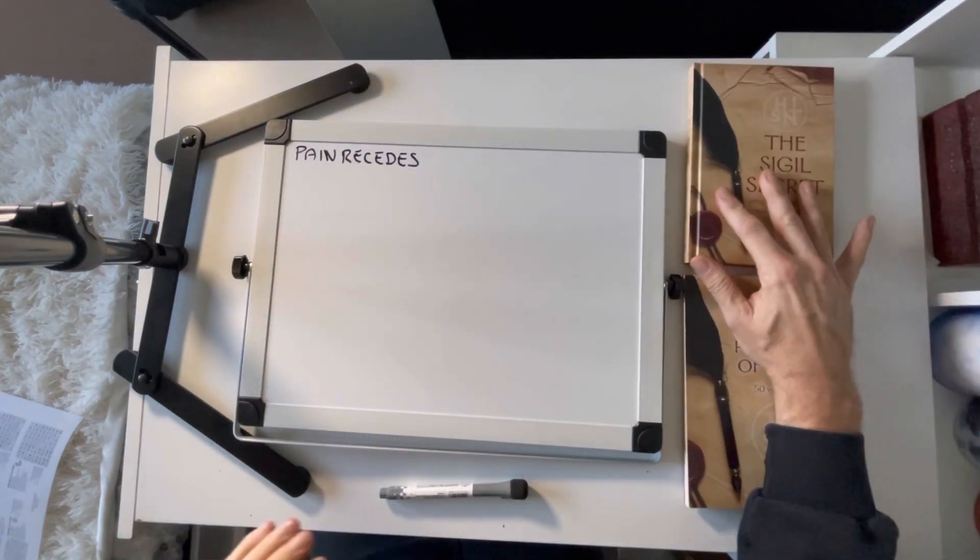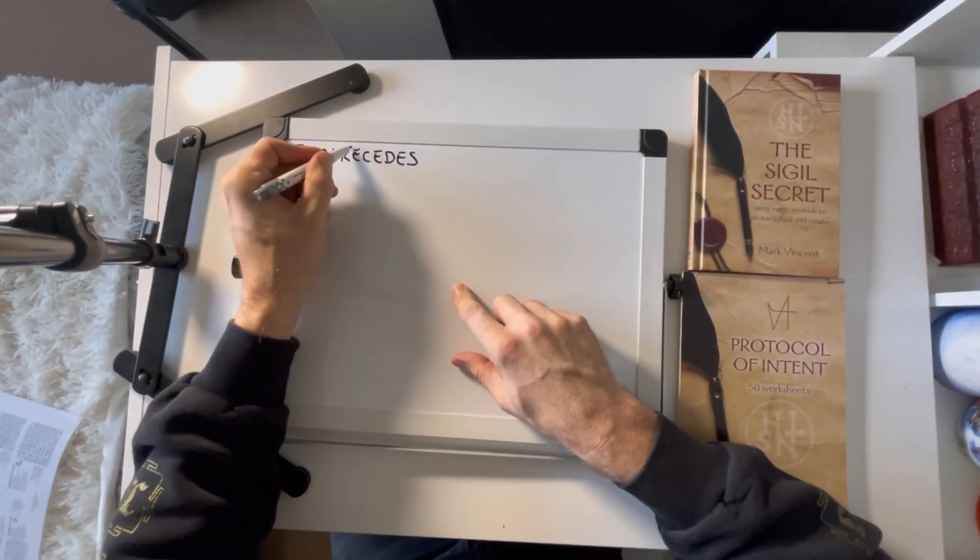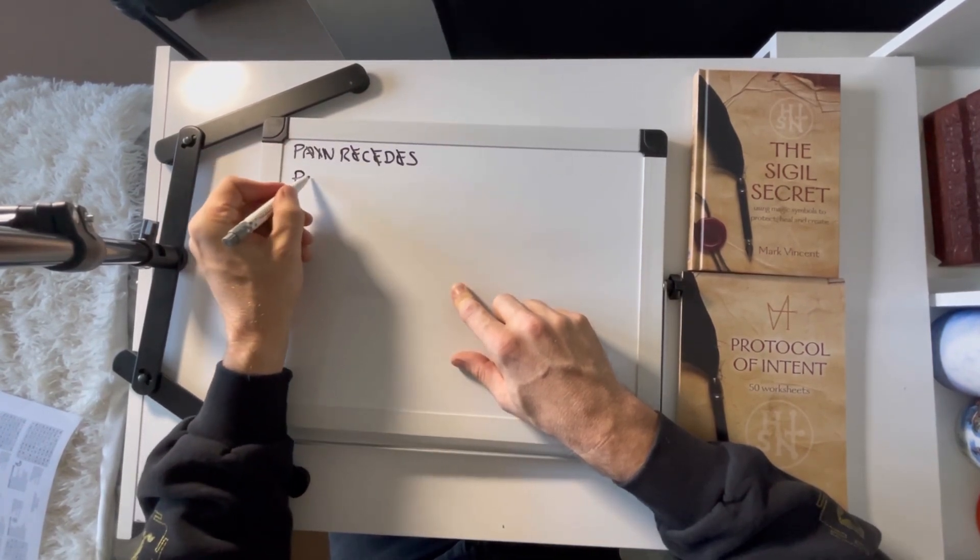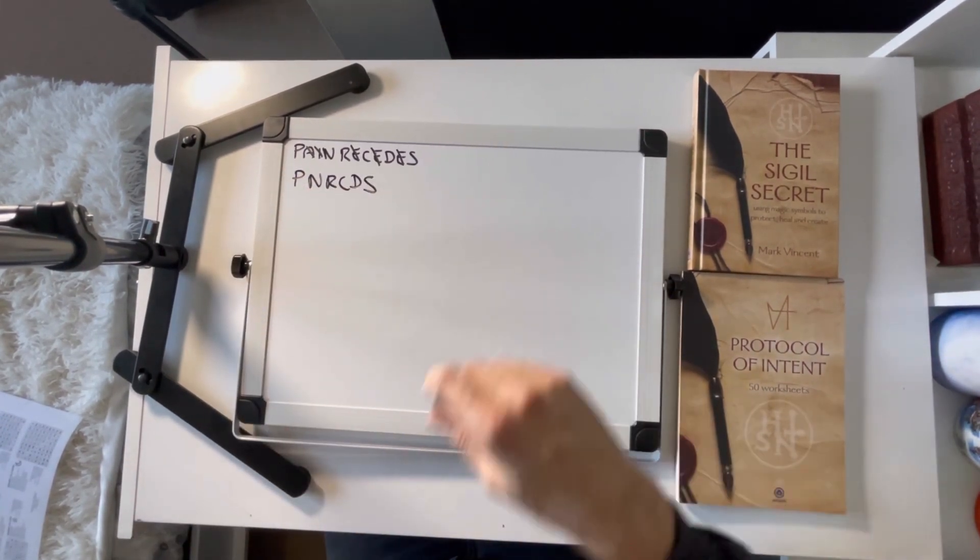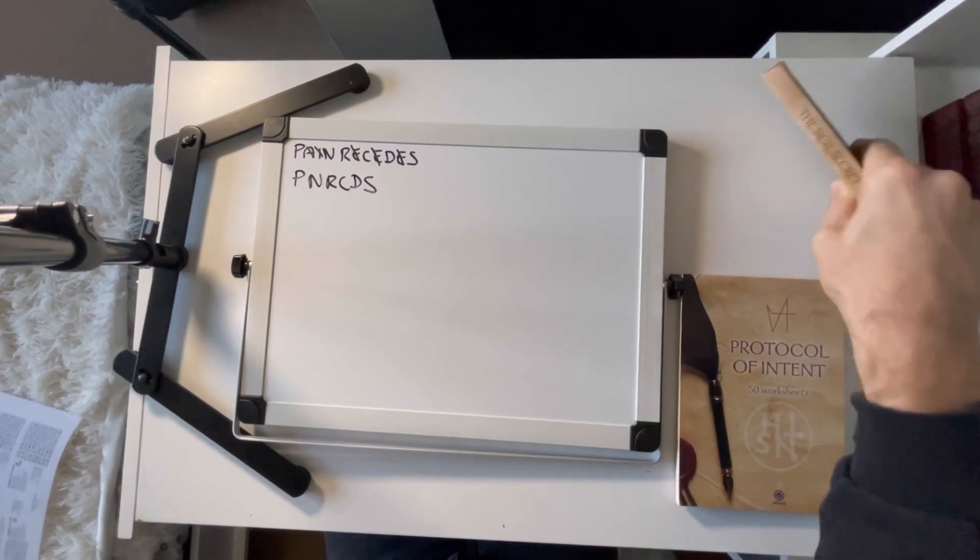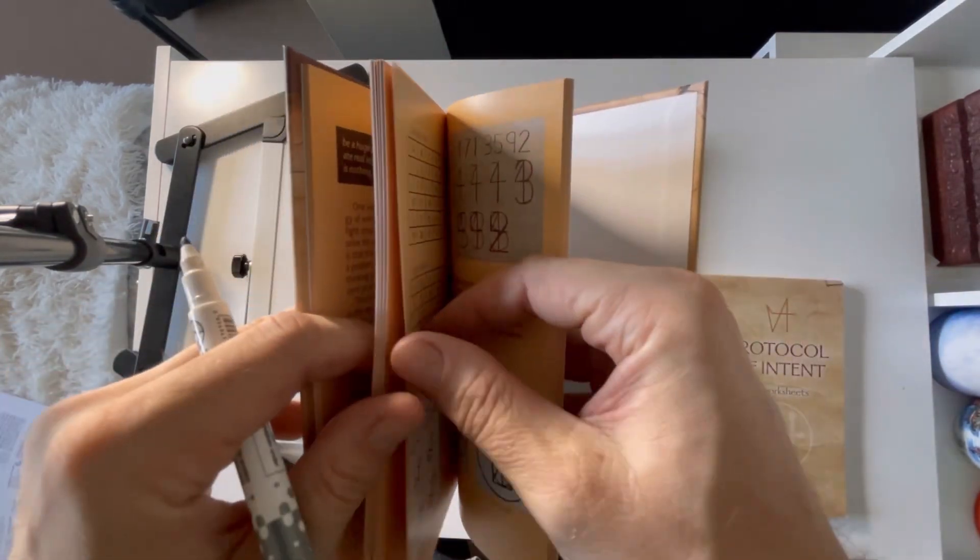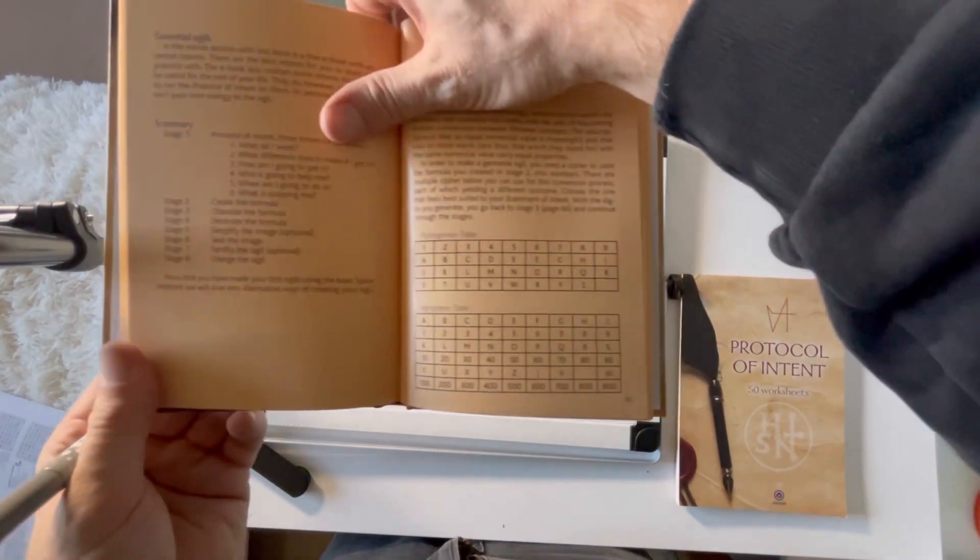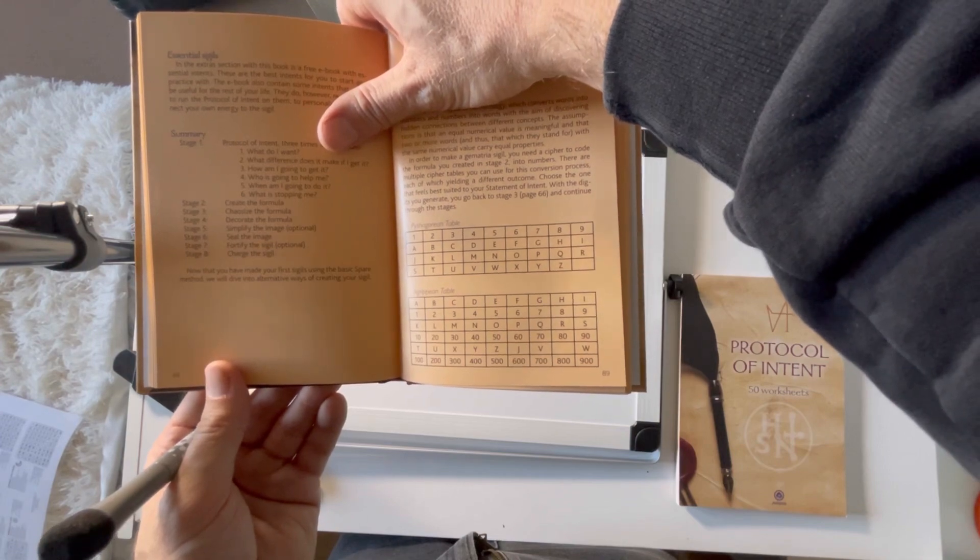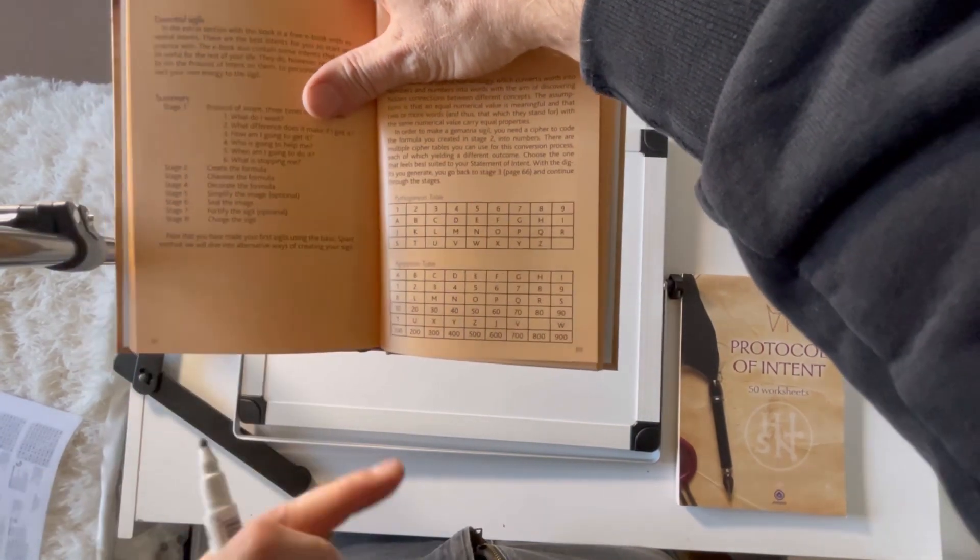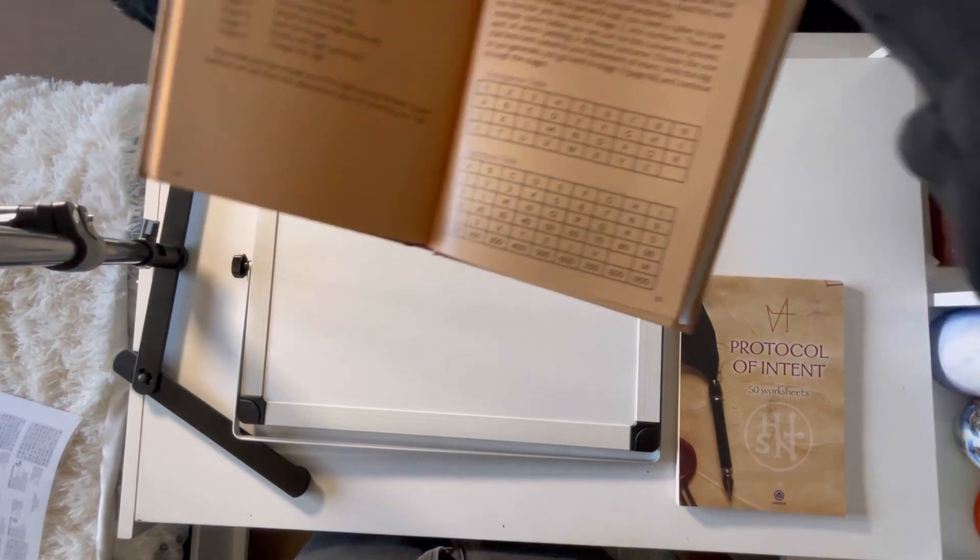The first thing we're going to do is eliminate the vowels: P-N-R-C-D-S. There don't appear to be any duplicate letters. Next, we'll look on page 89 of the book. We're going to use the Agripean table to get some larger numbers, and I'm going to show you how to handle larger numbers when you're making sigils.